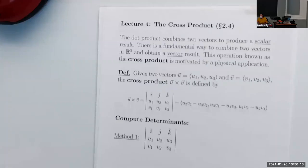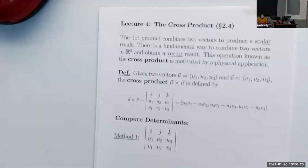The bigger the dot product is, the more parallel the vectors are. And the closer to zero it is — once it hits zero — they're perpendicular or orthogonal. So we learned about a product that combines two vectors together to get a scalar.